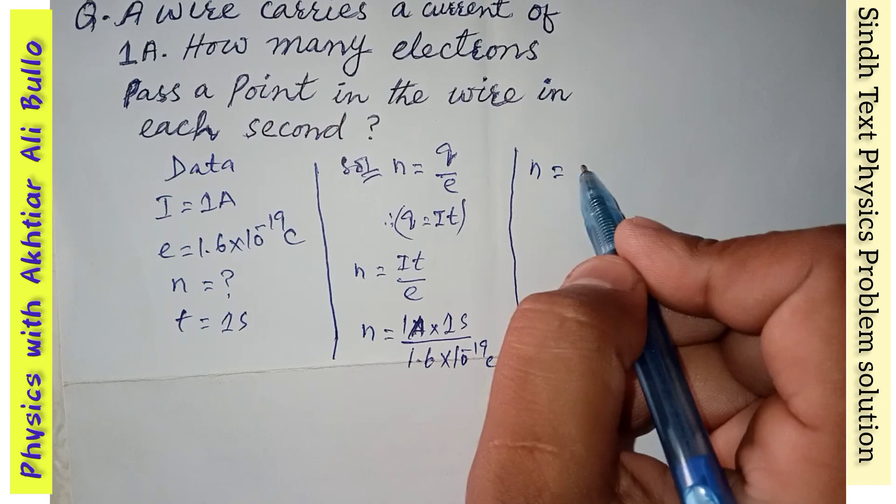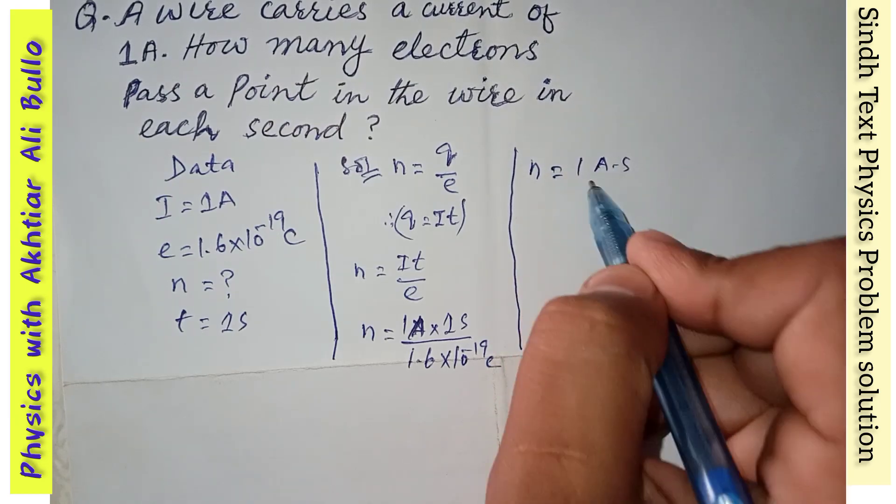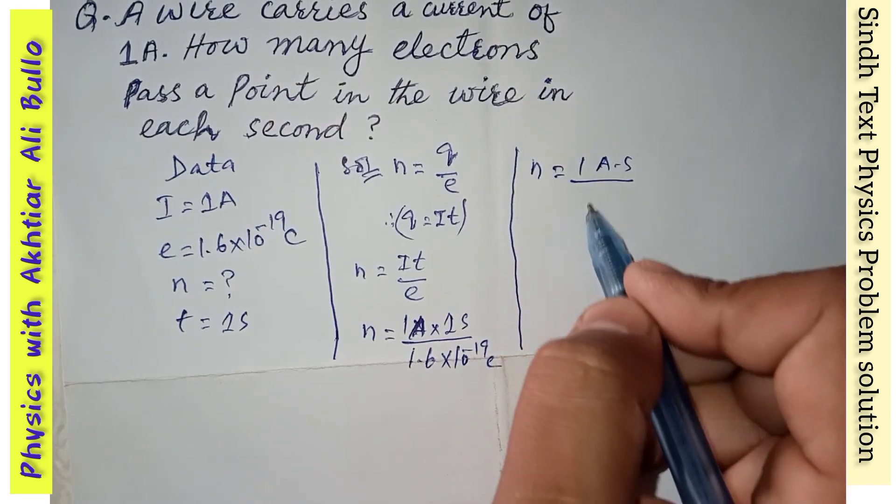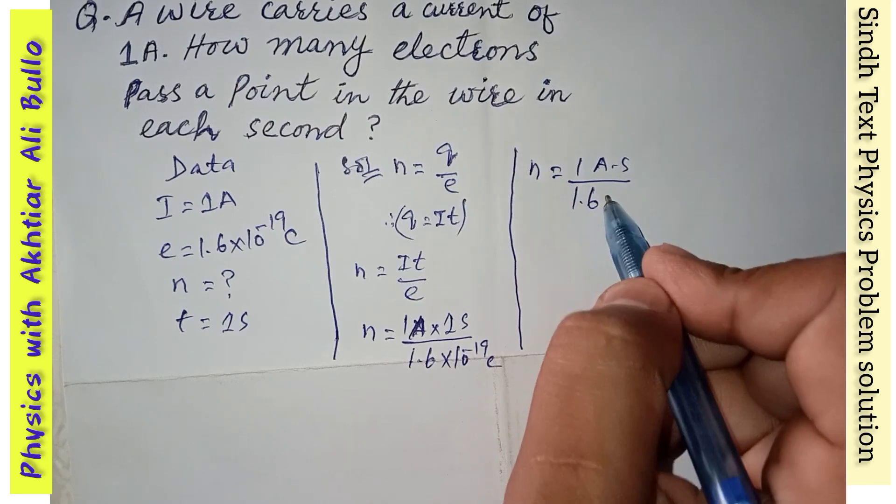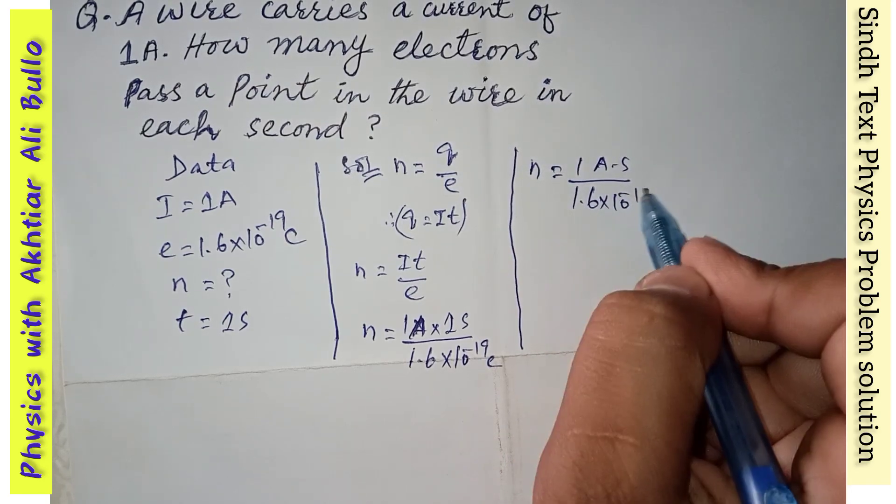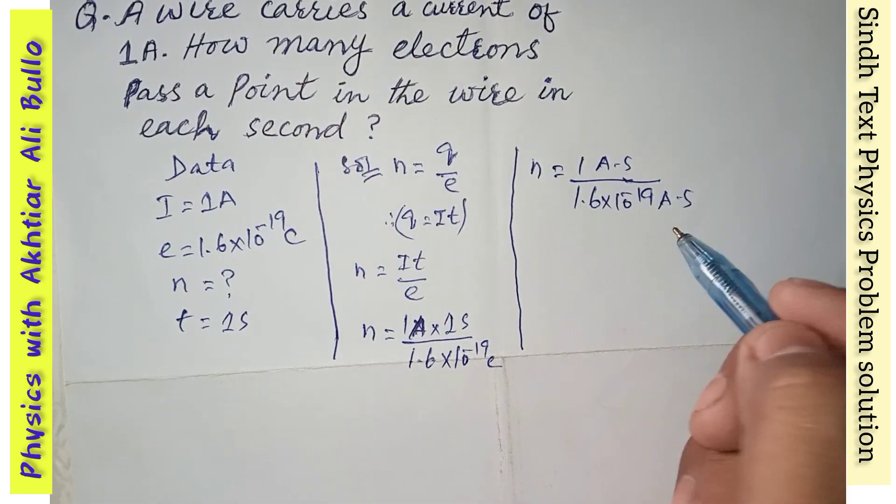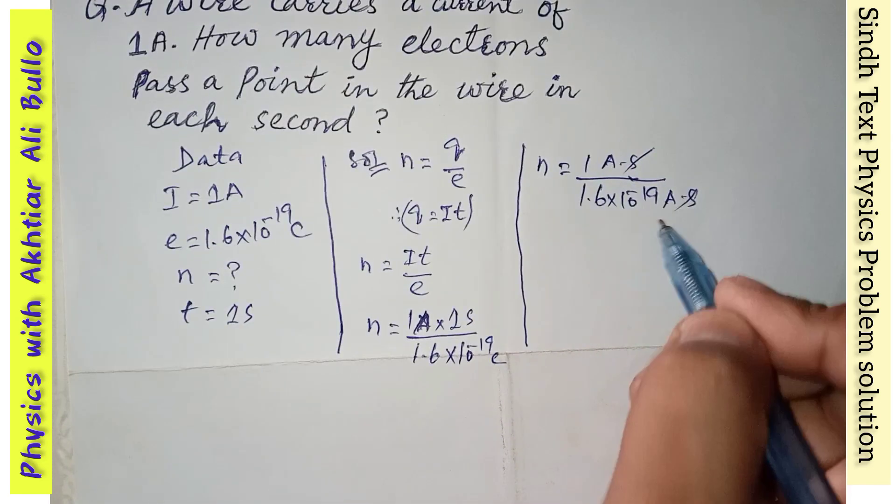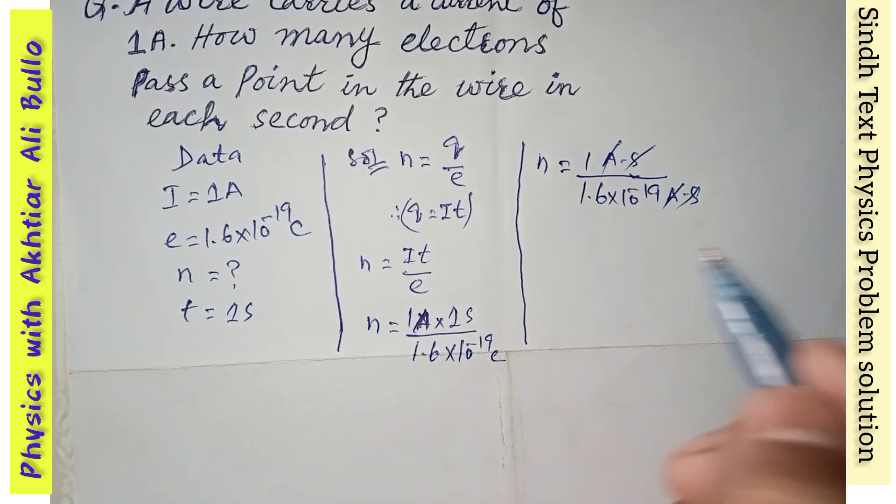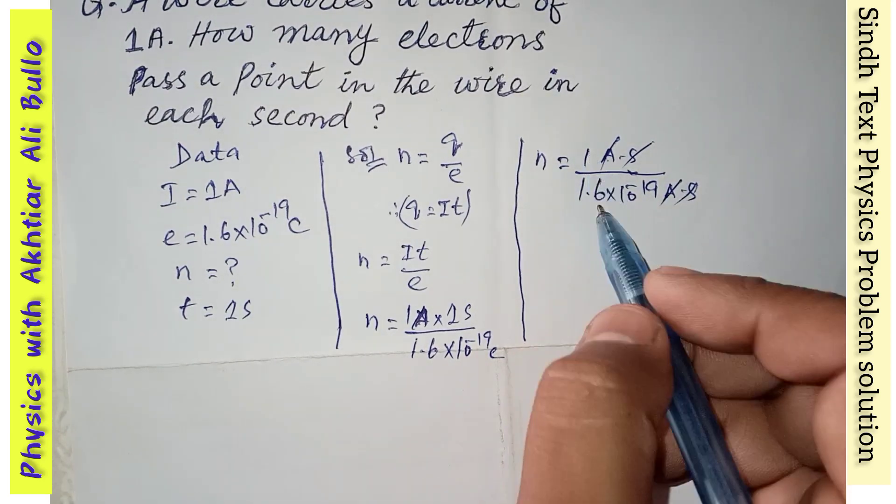which is 1 ampere-second divided by 1.6 × 10^-19 coulomb. As coulomb is equal to ampere times second, so ampere-second will be cancelled with ampere-second. So 1 divided